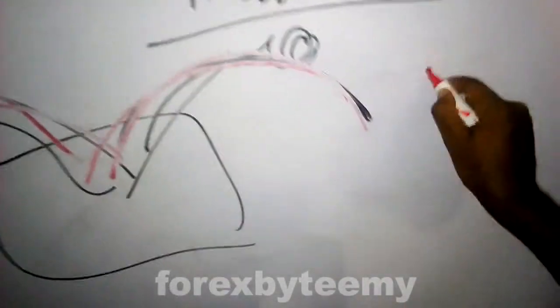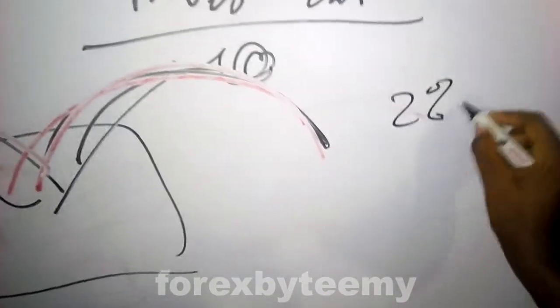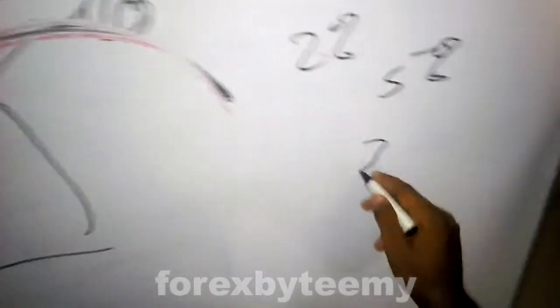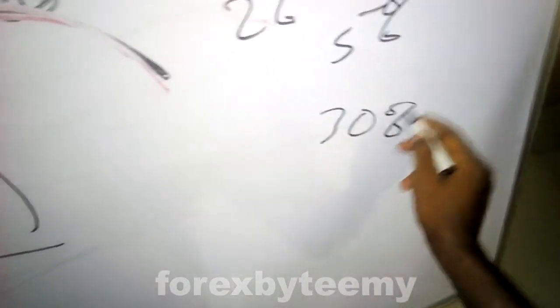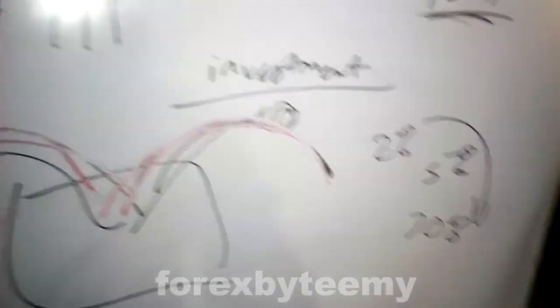Some HYIP sites used to promise like two percent daily, or some as well as five percent daily. Some were giving you like 30 percent daily. The higher the increase in the returns, the more risky and highly fake the site is.